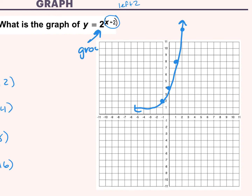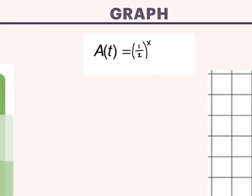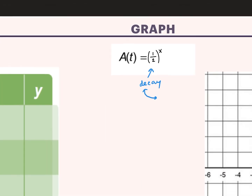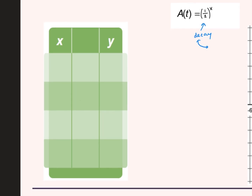Just by looking at this graph, is it going to be growth or decay? Decay — because the base is a fraction, which is less than 1, we know it's going to be decay. So right off the bat, we know it's going to be going down — it starts high and goes low. That's good to keep in mind when we plug in our numbers and graph our points, because if it doesn't have that shape, maybe we plugged in a number wrong. So what are some good numbers to plug in? Negative 1, 0, 1, and 2.